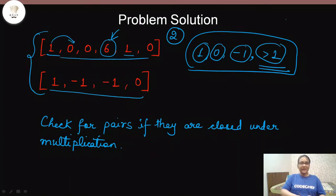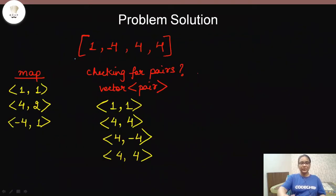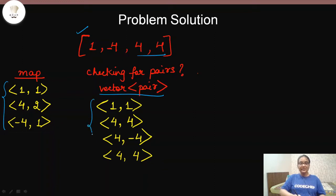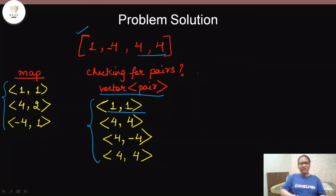We can do this efficiently using a map and a vector of pairs. For example, given the array [1, -4, 4, 4], we first form a map with the frequency of each element: 1 appears once, 4 appears twice, and -4 appears once. Then we form a vector of pairs to help calculate the multiplication of every pair of elements possible in the array.